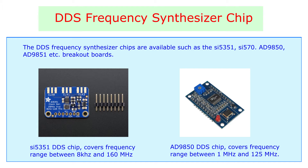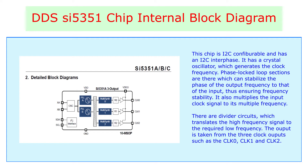1. DDS chip. The frequency generation of this VFO is done by the direct digital synthesizer chips available as the SI5351, SI570, AD9850, AD9851, etc. The chip used here is the SI5351, an I2C configurable clock generator. It has three different clock outputs: clock zero, clock one and clock two. This chip can generate frequencies from 8 kHz to 160 MHz and needs a supply voltage of 3.3 volts.